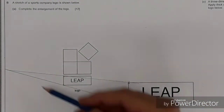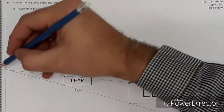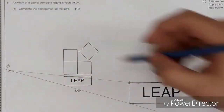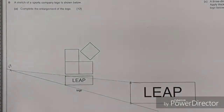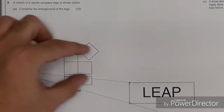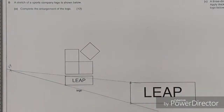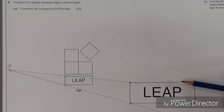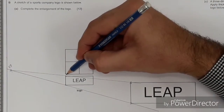Wherever these lines cross, this is what we're going to call our vanishing point. This is going to be used as a reference to measure the rest of these shapes and enlarge them to the right-hand side. So the bottom of the logo is complete.